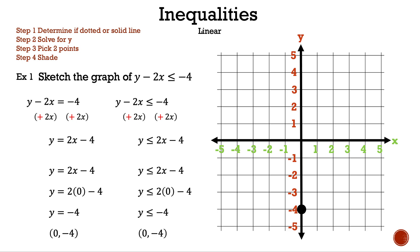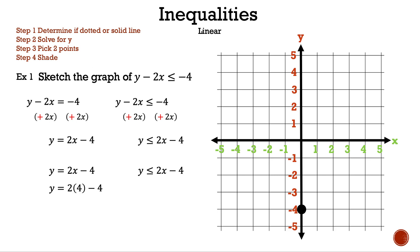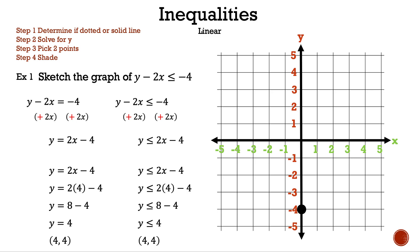Finding points with equations and inequalities is very similar. Let's find the second point. Using 4 as input: y equals 2 times 4 minus 4, and 2 times 4 is 8, and 8 minus 4 is 4. So the output is 4, and our point is (4, 4). The same calculation with the inequality also gives us the point (4, 4).